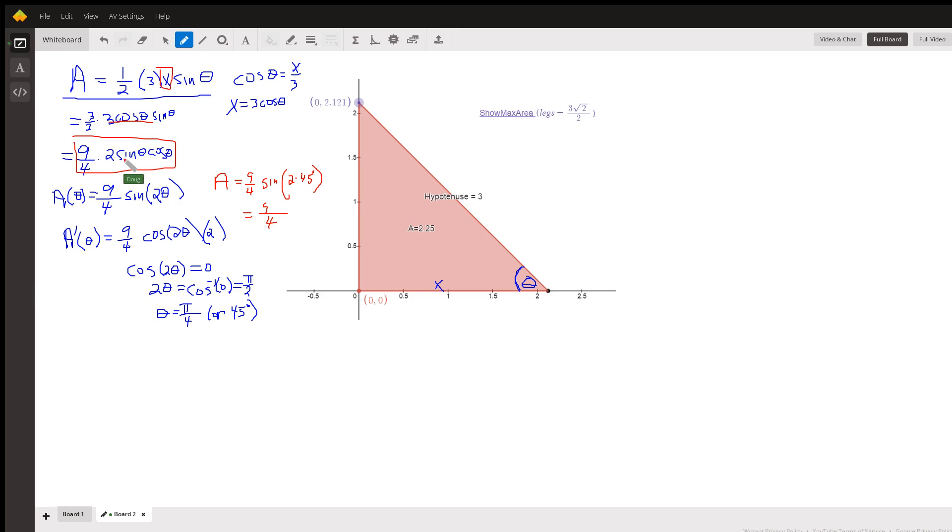But then you can rewrite that like this. And why do we do that? So that we can replace this with the double angle equivalent sine of two theta. So there's an area function in terms of theta. Nine fourths sine of two theta. So the derivative is nine fourths cosine of two theta times two.